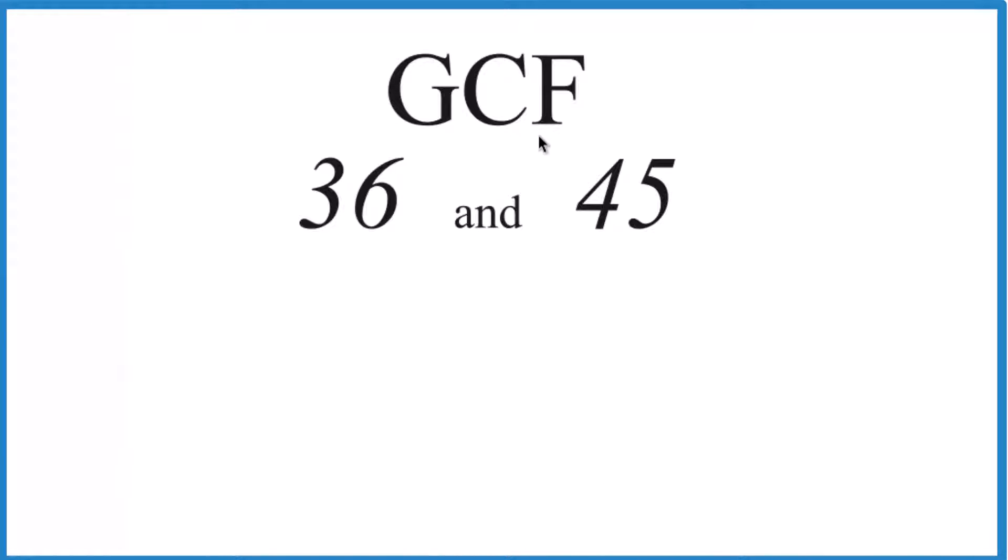So what we need to do, we need to find all the factors here for 36 and 45, look at the ones common between them, and choose the greatest one. That's the GCF. So for 36, these are the factors right here.